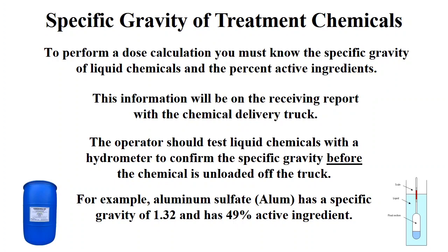Alum is a coagulant and helps remove the turbidity from the water. The specific gravity of 1.32 means that alum is 32% heavier than water. Alum is 49% aluminum sulfate. It is important to know the active ingredient, since only 49% of the alum you feed at your plant will coagulate the water.